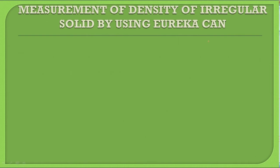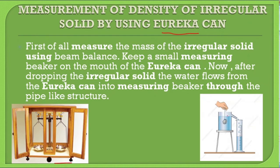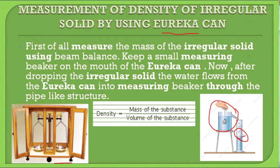Now we have another method — finding density of an irregular solid using a Eureka can. As before, density equals mass upon volume. First we measure the mass with a physical balance. Then we fill the Eureka can with water and dip the irregular solid in it — the water overflows and is collected in a measuring cylinder. Whatever volume is collected, that is our volume. Then we put the values of mass and volume into the density formula to get the density of the irregular solid.